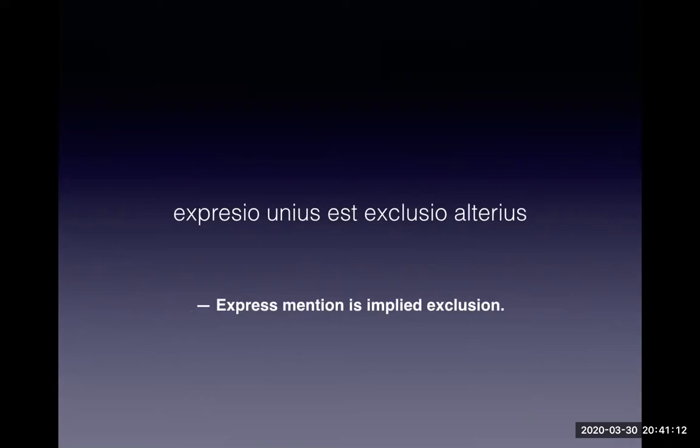Next, we have expressio unius est exclusio alterius, which means 'express mention is implied exclusion.' This has been used in numerous cases and the rule has not changed. Simply put, the enumeration of specified matters in a statute is construed as an exclusion of matters not enumerated unless a different intention appears.